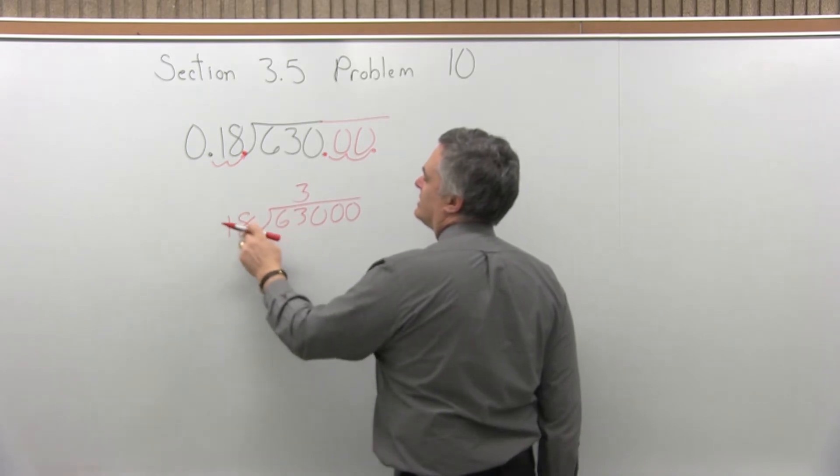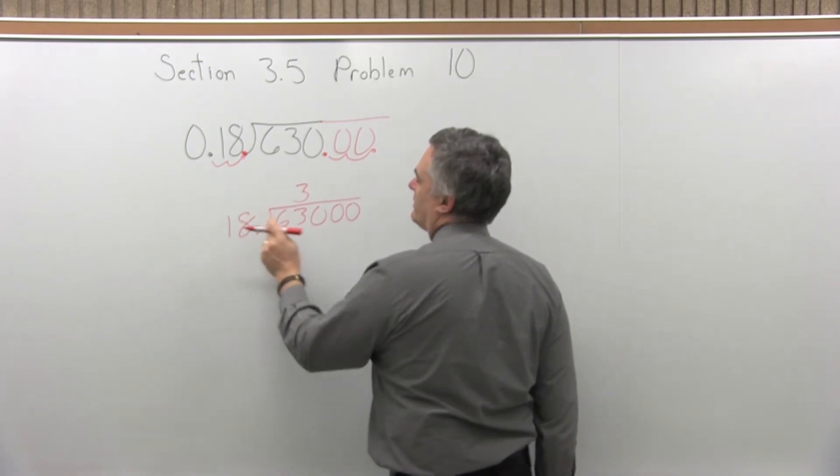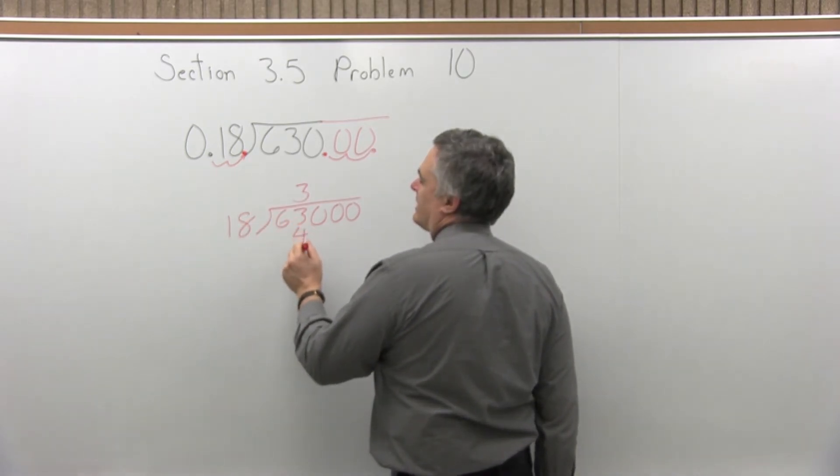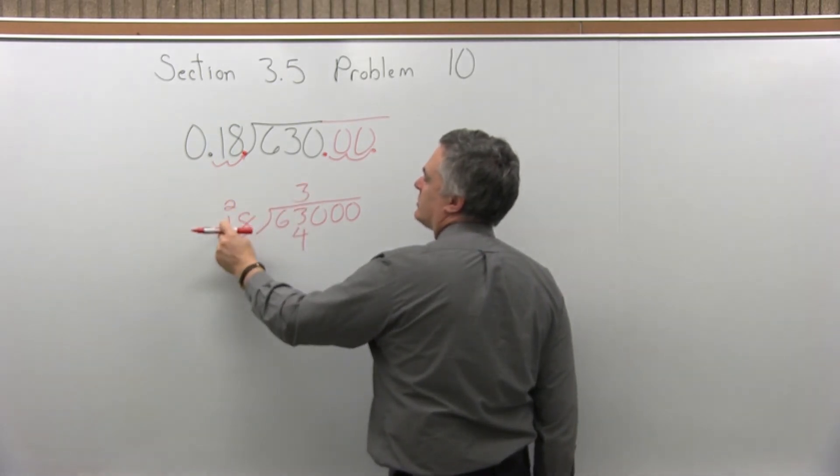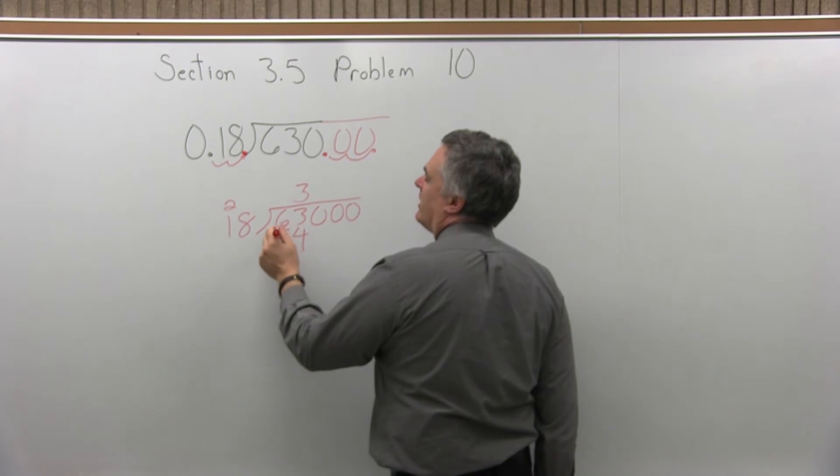3 times 8 is 24. I'm thinking of the final answer. Write the 4, carry the 2. 3 times 1 is 3, 3 plus 2 more, 54.